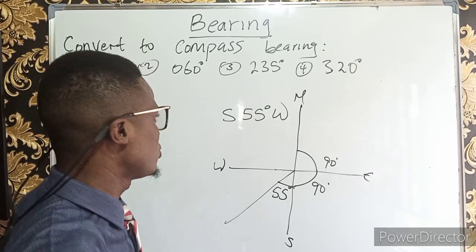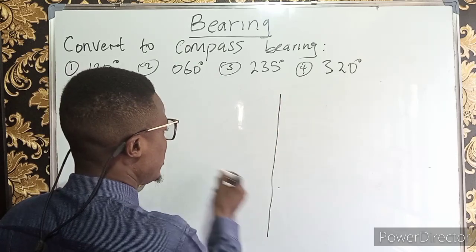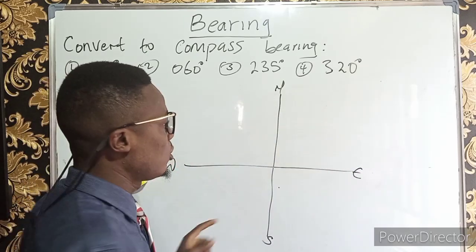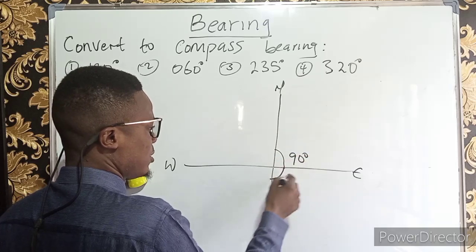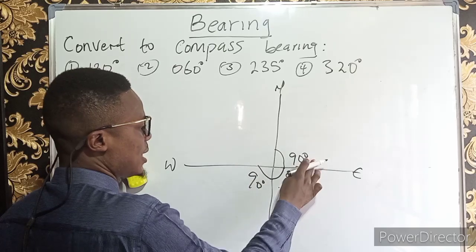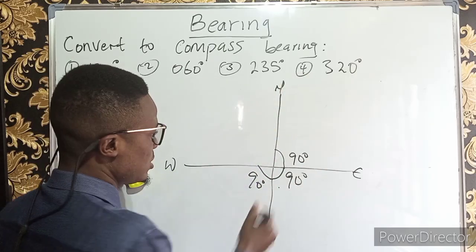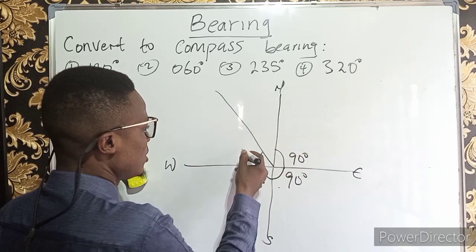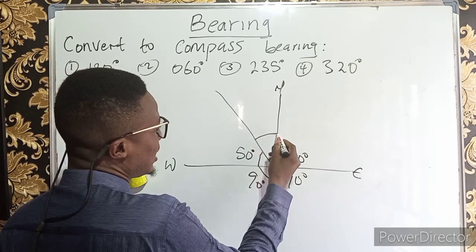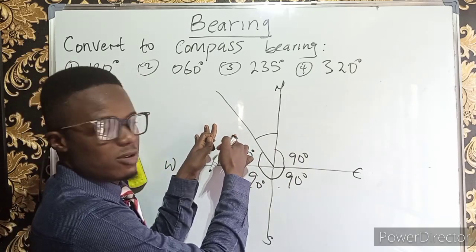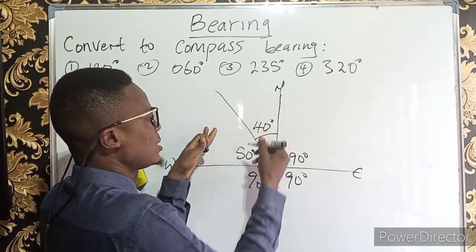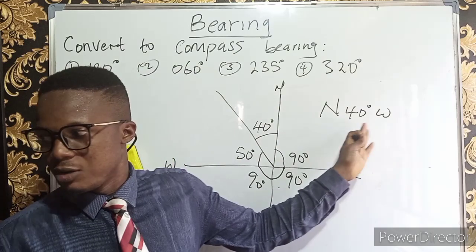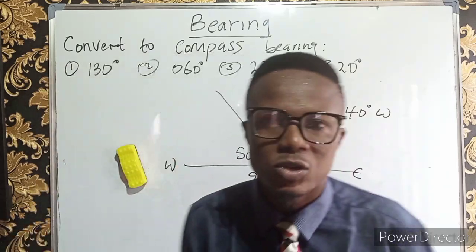For 320 degrees: draw north, south, west, east. Turn clockwise — 90, 90, 90 equals 270 degrees; not yet 320. So it falls in the fourth quadrant. 320 minus 270 gives 50 degrees. But we need the angle attached to the north, and this quadrant is 90 degrees. So 90 minus 50 gives 40 degrees. This is in the northwest region, and the answer is north 40 degrees west, or 40 degrees west of north.